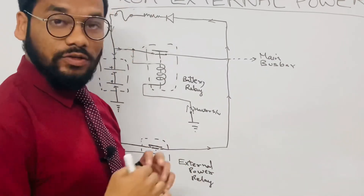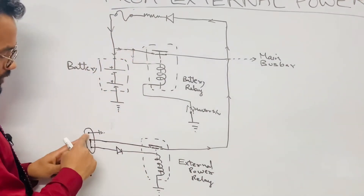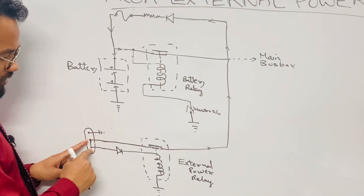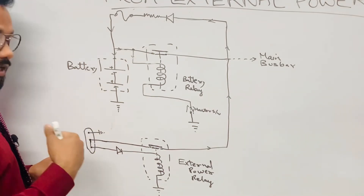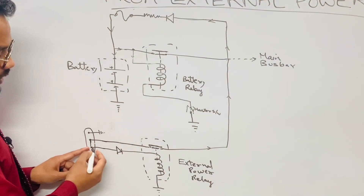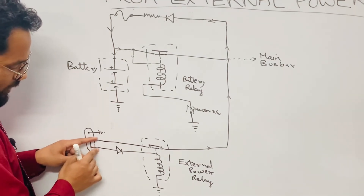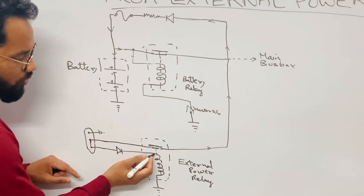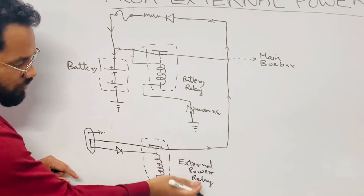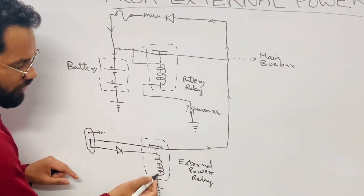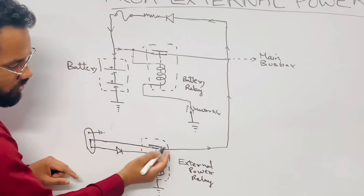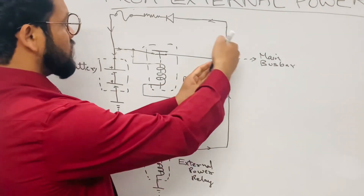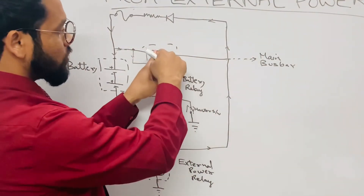To summarize: when we connect external power there are three pins — the biggest pin is grounded and the two smaller pins are positive. From these two positive pins, the supply goes forward. By means of a diode it is converted to a pure positive signal, that positive signal goes to the coil of the external power relay and gets a grounding path. When this coil gets its grounding path, the external power relay contact closes, and the external power goes ahead.